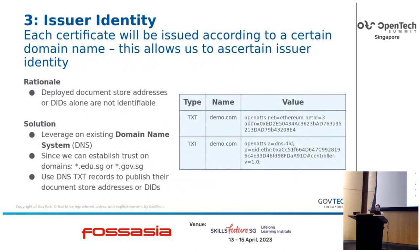The final step of verification is on issuer identity. Currently we leverage the Domain Name System — we use DNS text records to publish the document store address or the DID, which is then checked so we know the credential is issued by the entity controlling that domain.